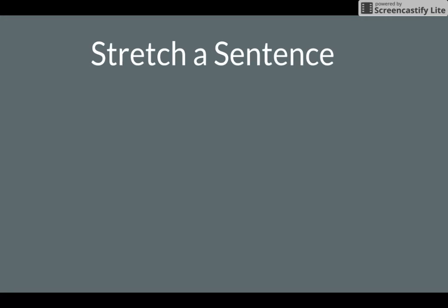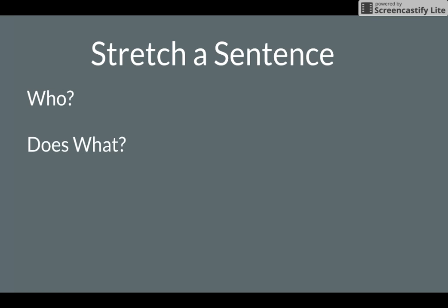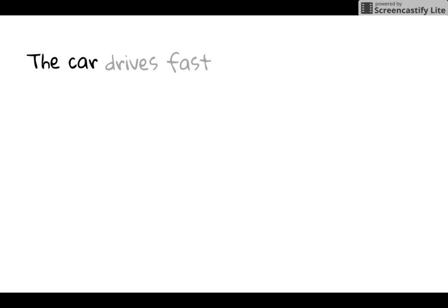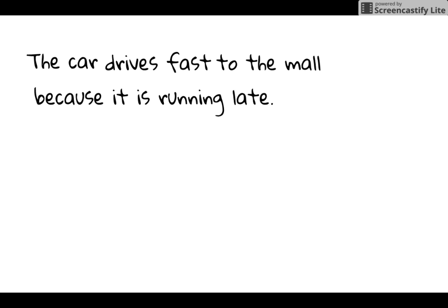So what we want to do when writing a strong sentence is think about how we're going to stretch it out. We want to make sure we include the who, does what, where, and why. So let's take that sentence from earlier and make it stronger. The who is 'the car,' does what — 'drives fast,' where — 'to the mall,' and why — 'because it is running late.' So now my sentence says: 'The car drives fast to the mall because it is running late.'